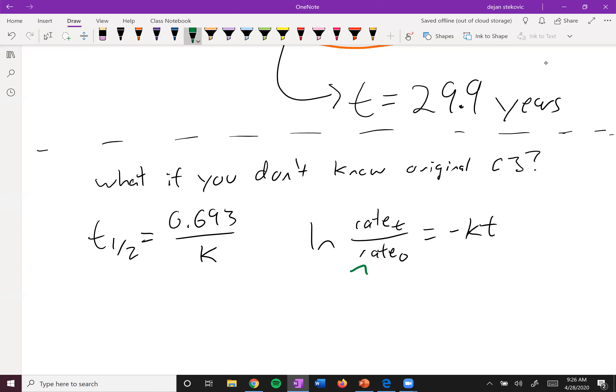This will be equal to -kt. We can figure this out from the rate instead. Remember, the half-life is constant, but the rate is not.